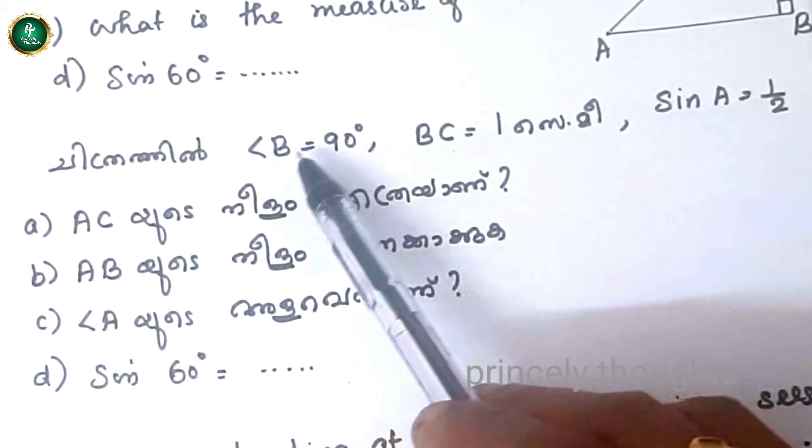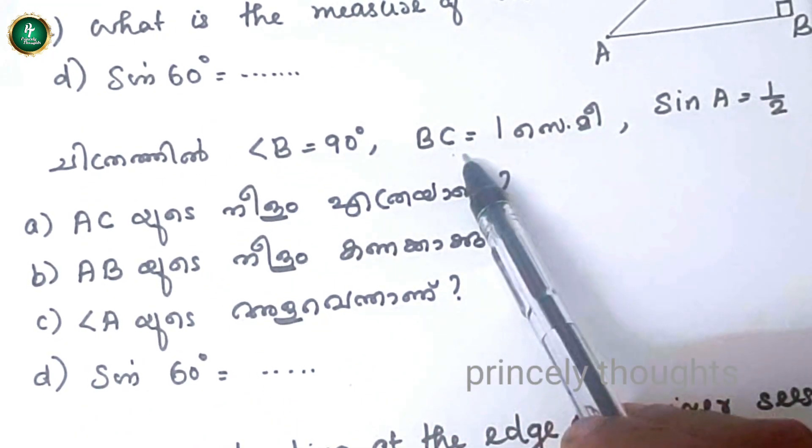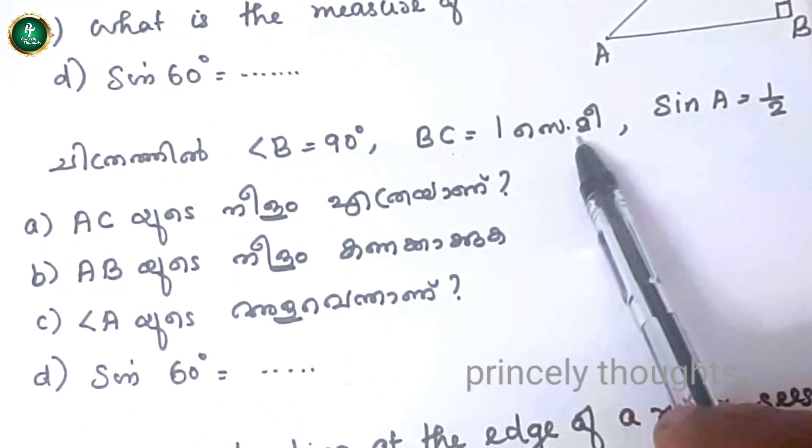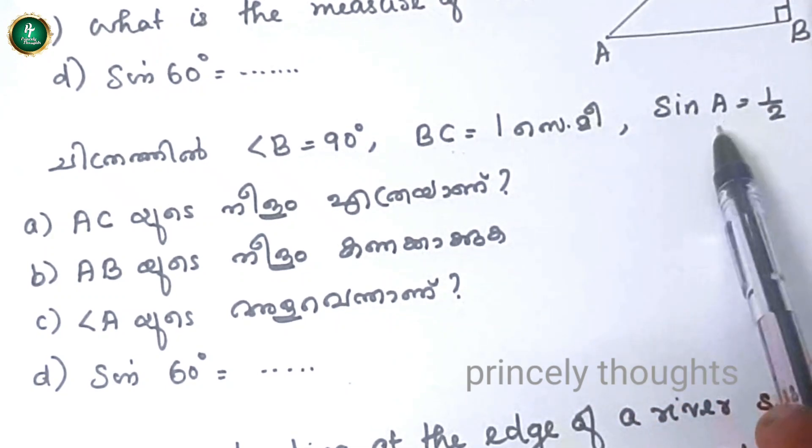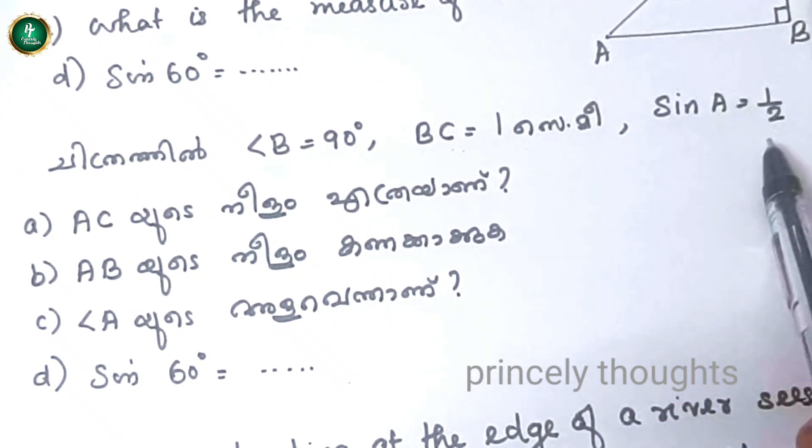In the figure, angle B is equal to 90 degrees. BC is equal to 1 cm. Sin A is equal to 1 by 2.